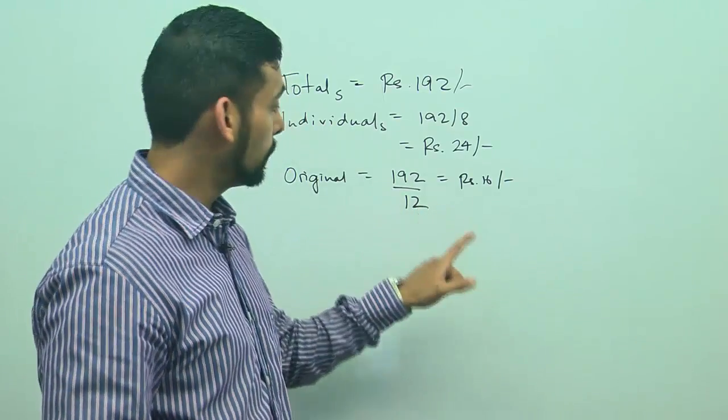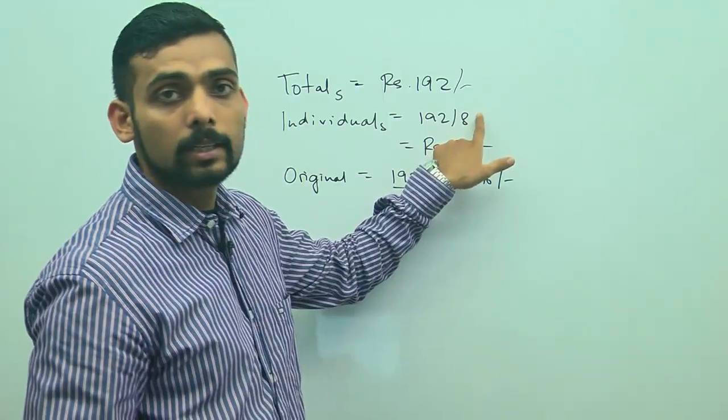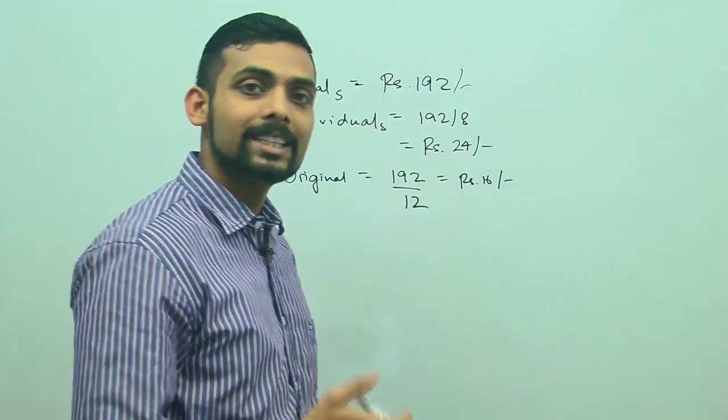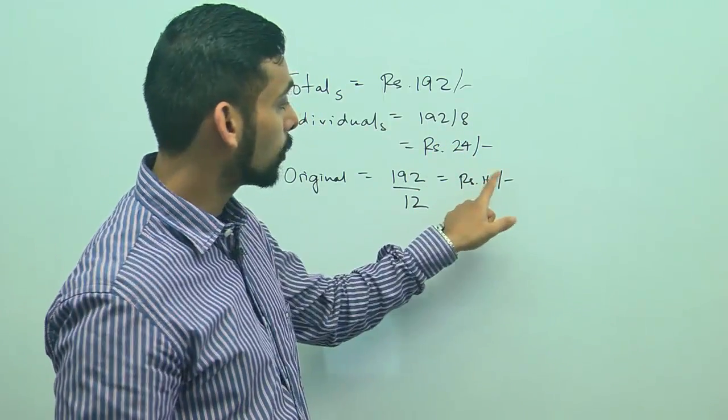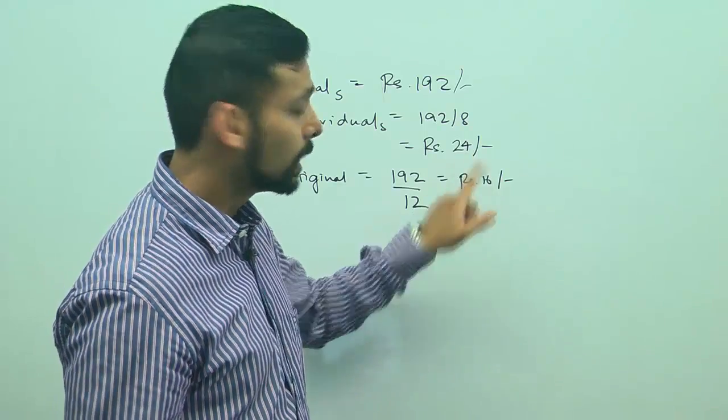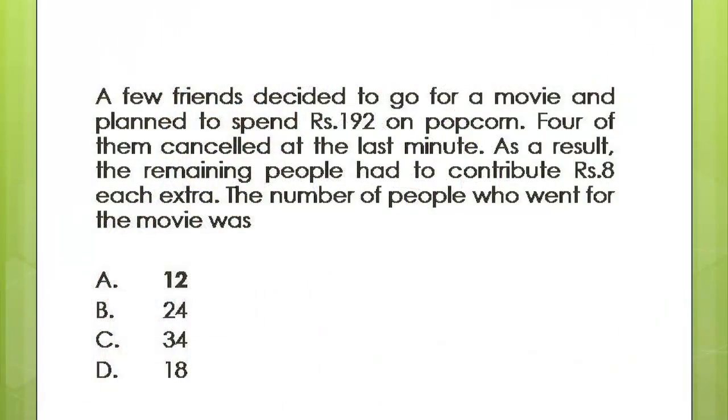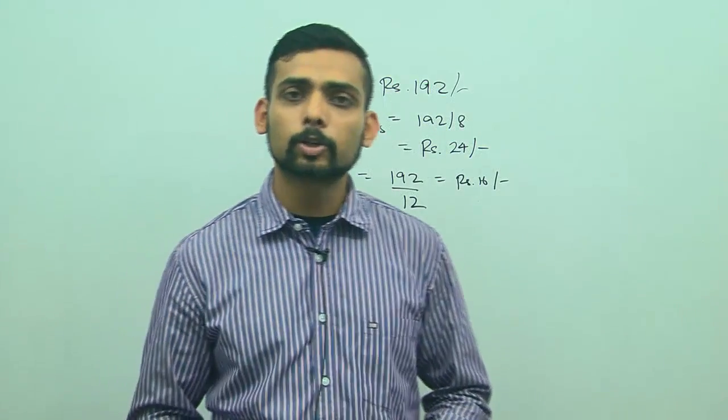So I see that because 4 people dropped out, number of people reduced from 12 to 8, they had to spend 8 rupees each extra. So the spend went up from 16 rupees per person to 24 rupees per person. So I evaluated my first option and I got the answer. Now this will not always be the case, so you should be able to evaluate all four options quickly.